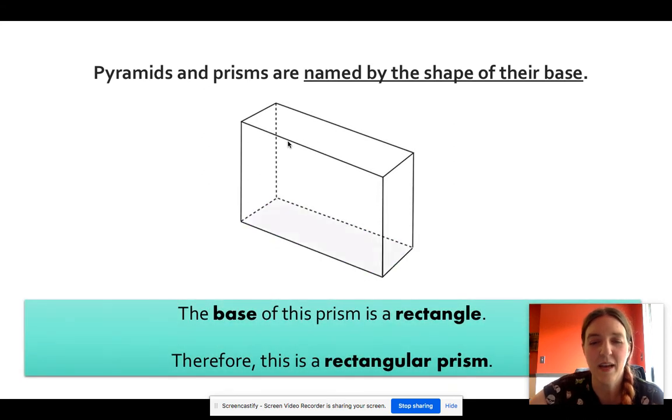Here we have a rectangular prism. So again, it's got that rectangle flashing in purple at the bottom and the exact same size rectangle above it, making that flat top. So because the base of this prism is a rectangle, we call it a rectangular prism.